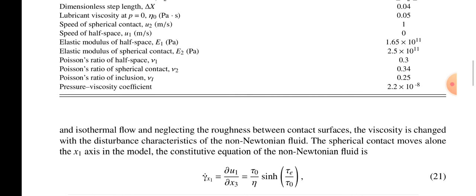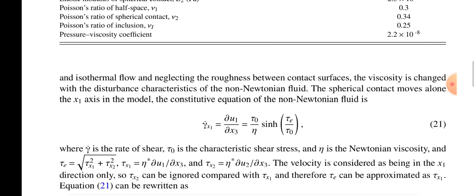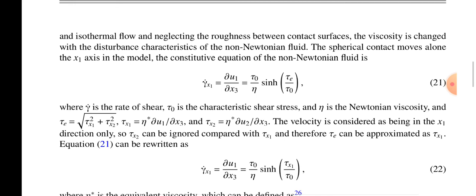In the model, the constitutive equation of non-Newtonian fluid is: ν = γ̇ = du₁/dx₃ = (τ₀/η)sinh⁻¹(τₑ/τ₀). This is the Newtonian fluid where there is shearing, some velocity. γ is there - gamma is the shear rate.